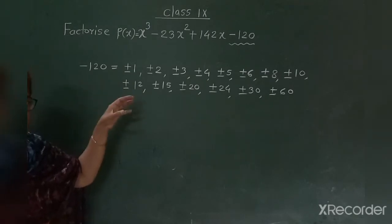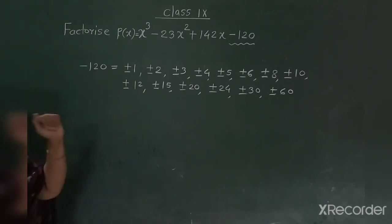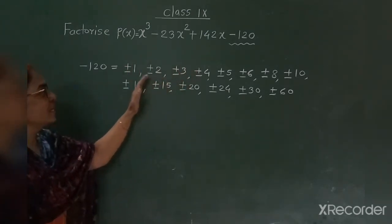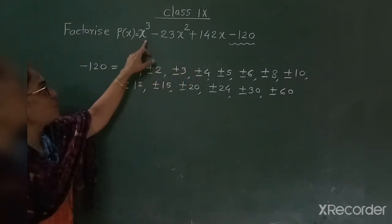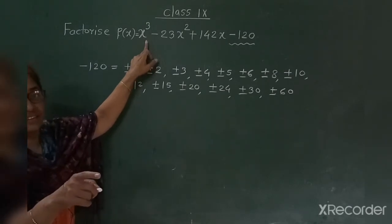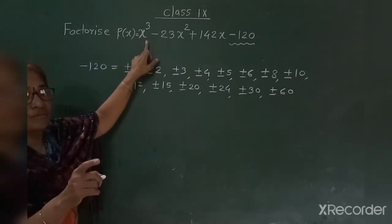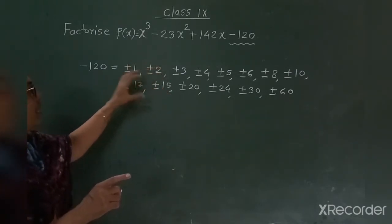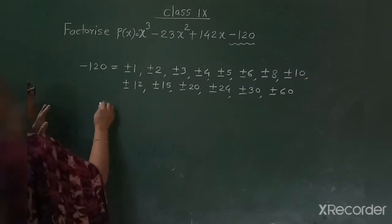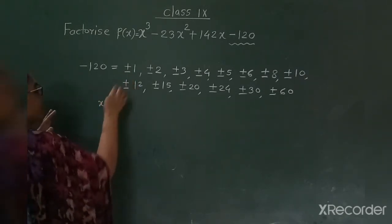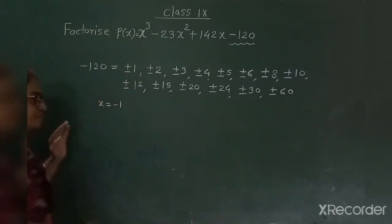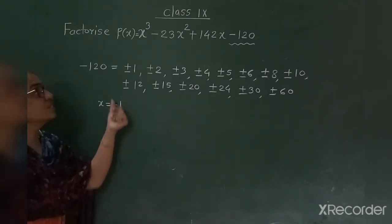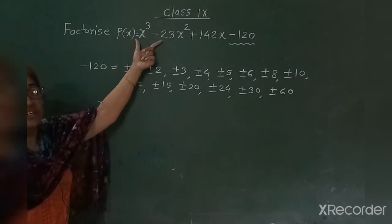This was step number one. Now step number two — you have to identify which of these factors is a zero of this polynomial. To identify this, we need to try three factors. For example, let's first take x equal to minus 1, and check whether negative 1 is a zero of this cubic polynomial.